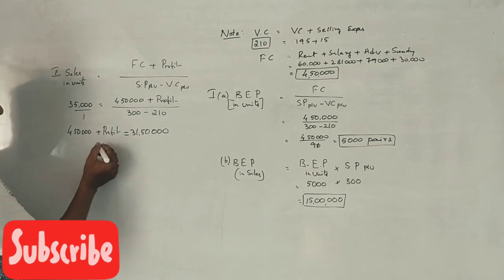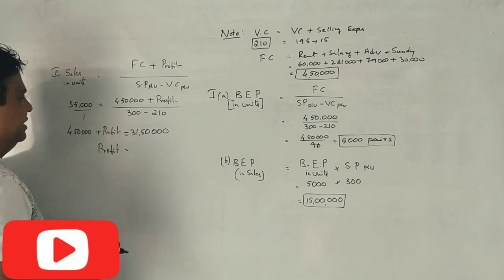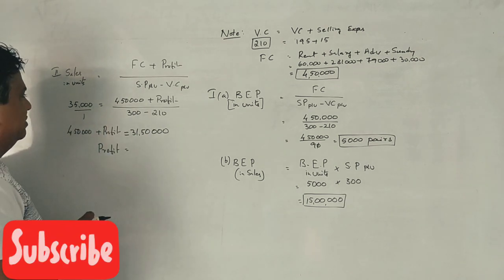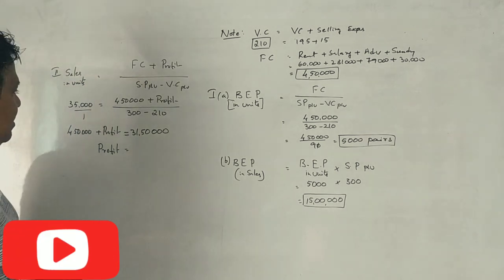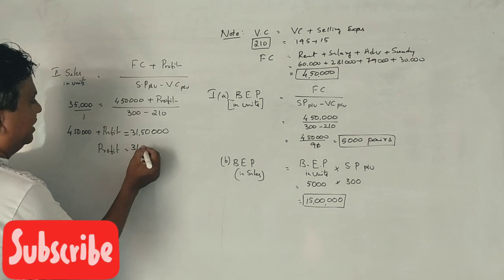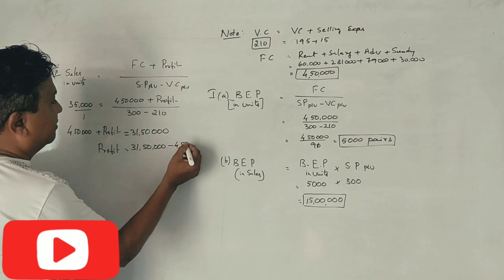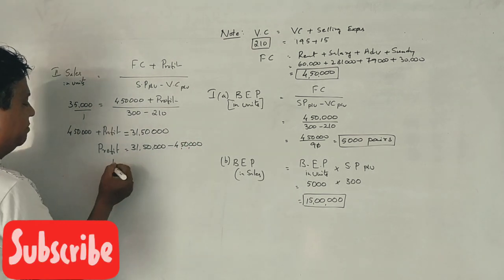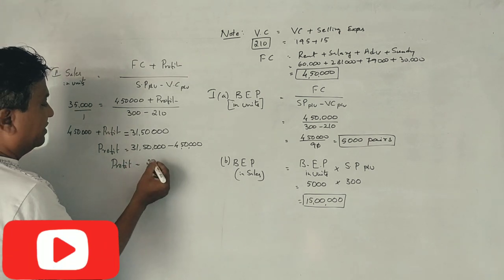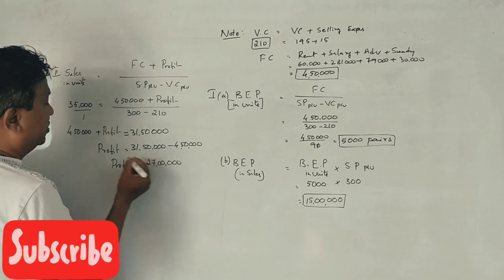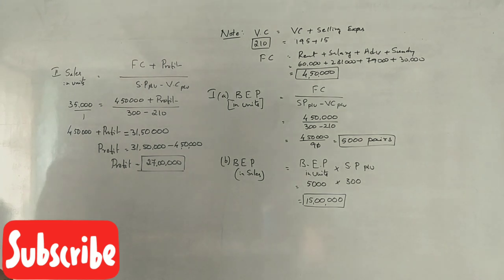So total contribution is 31,50,000 rupees. Subtract fixed cost of 4,50,000 rupees. Profit = 31,50,000 minus 4,50,000 = 27,00,000 rupees, i.e., profit is 27 lakhs.